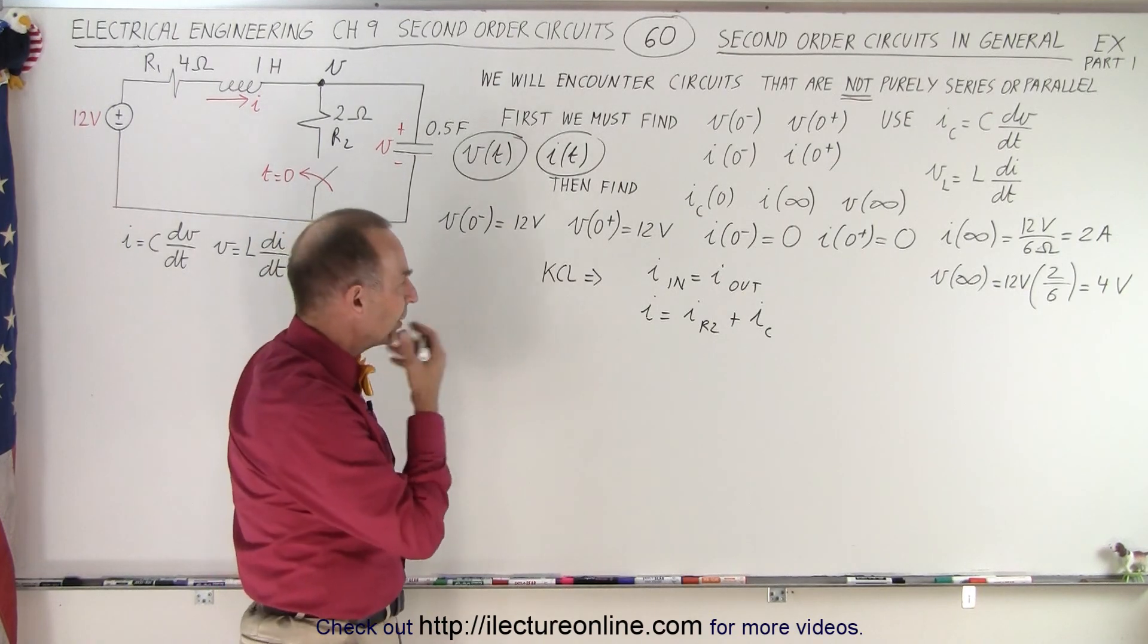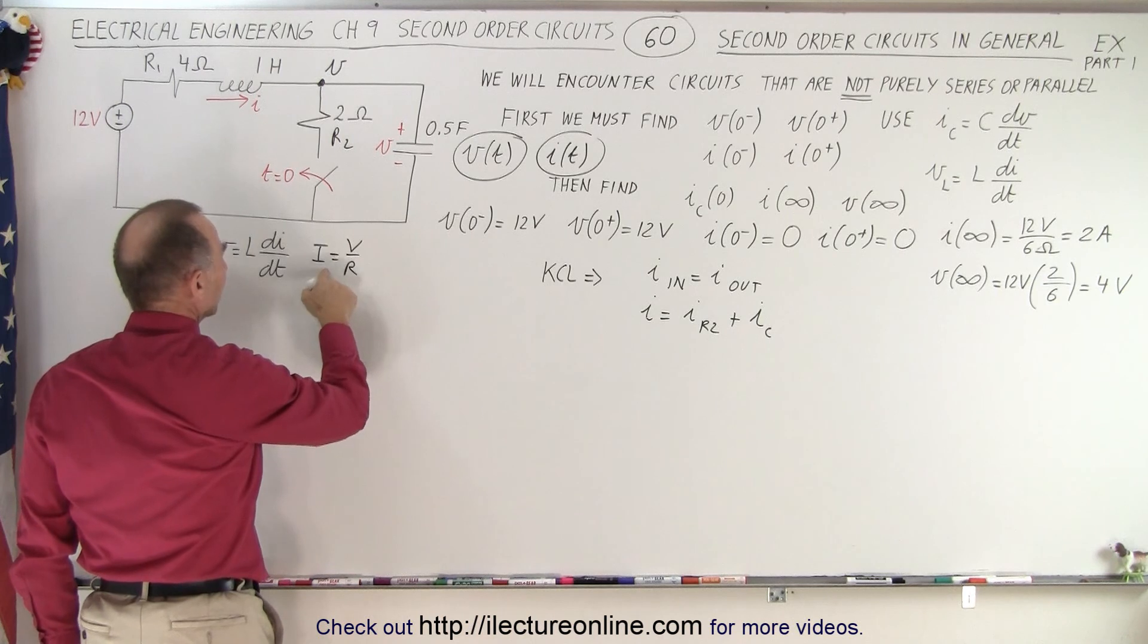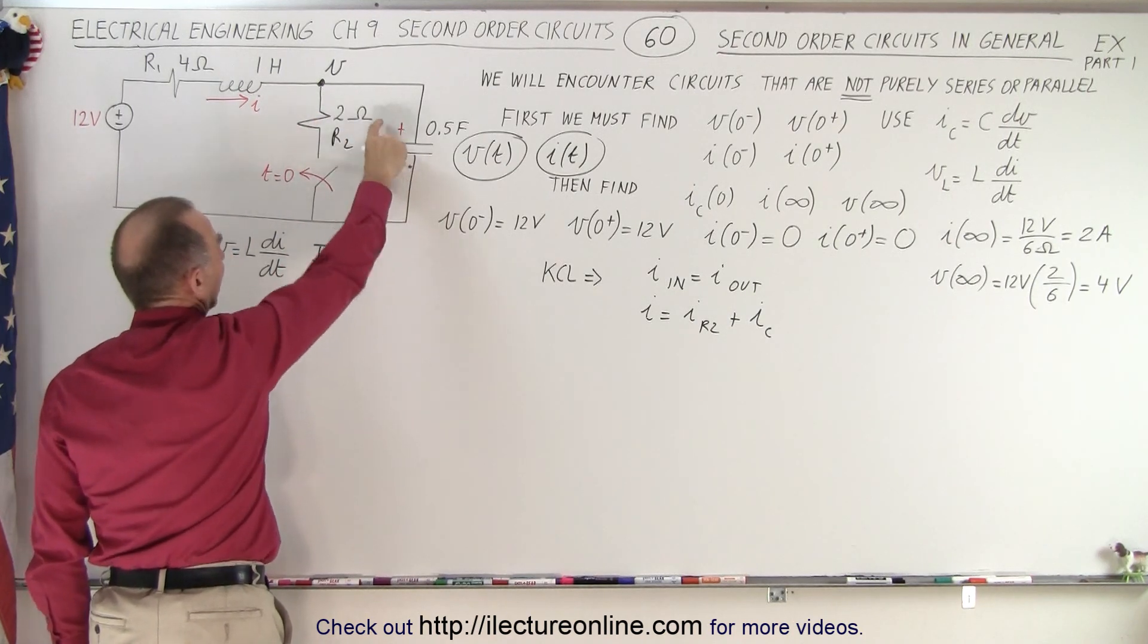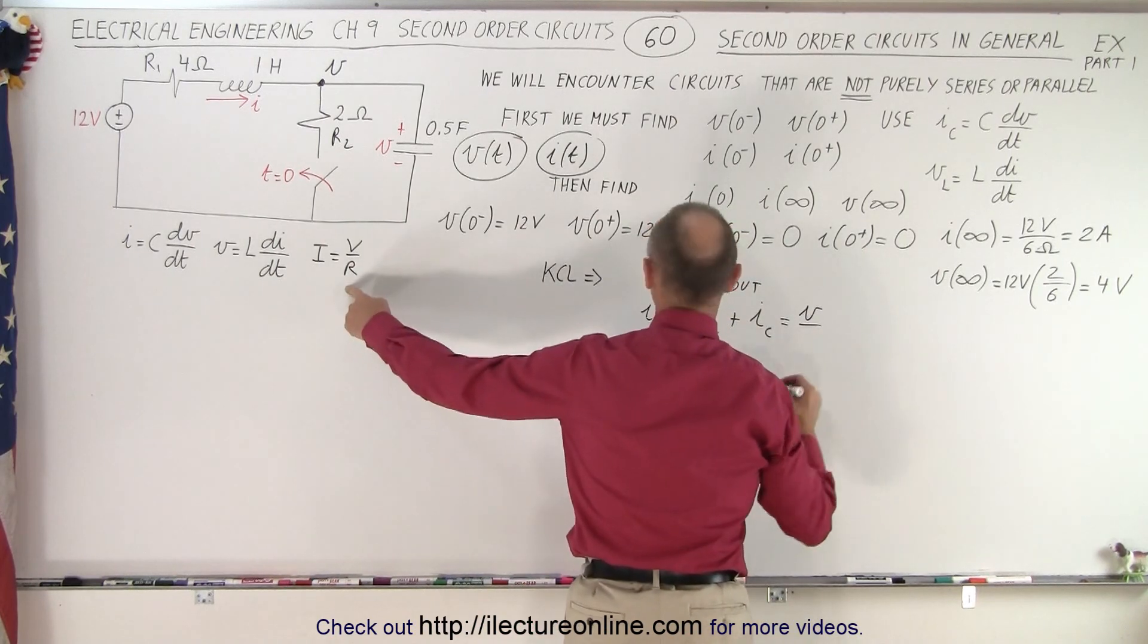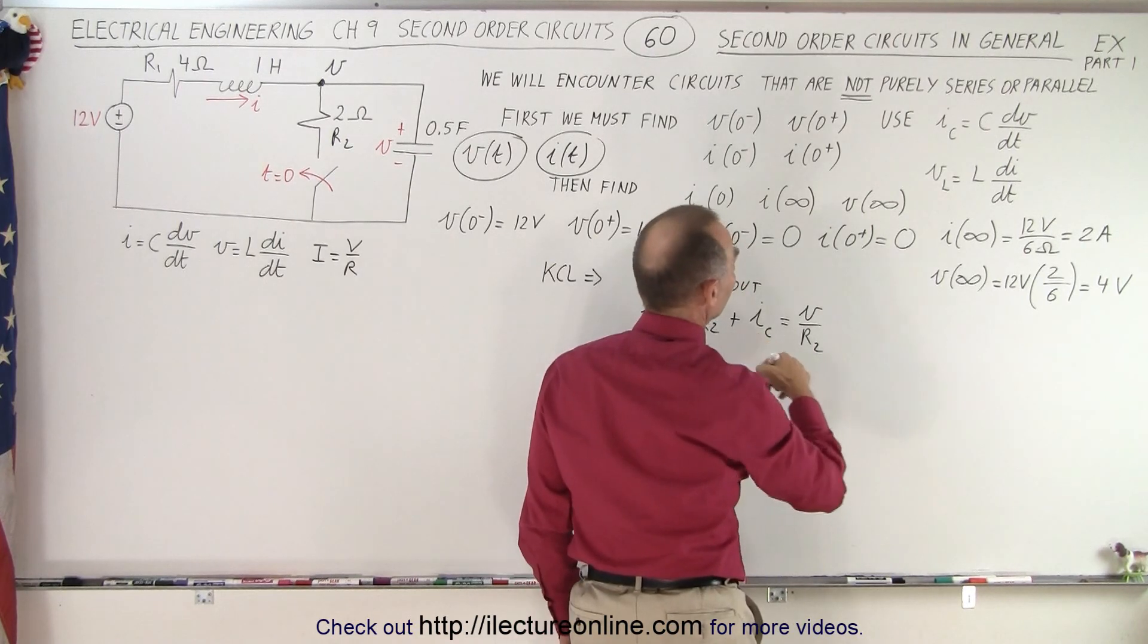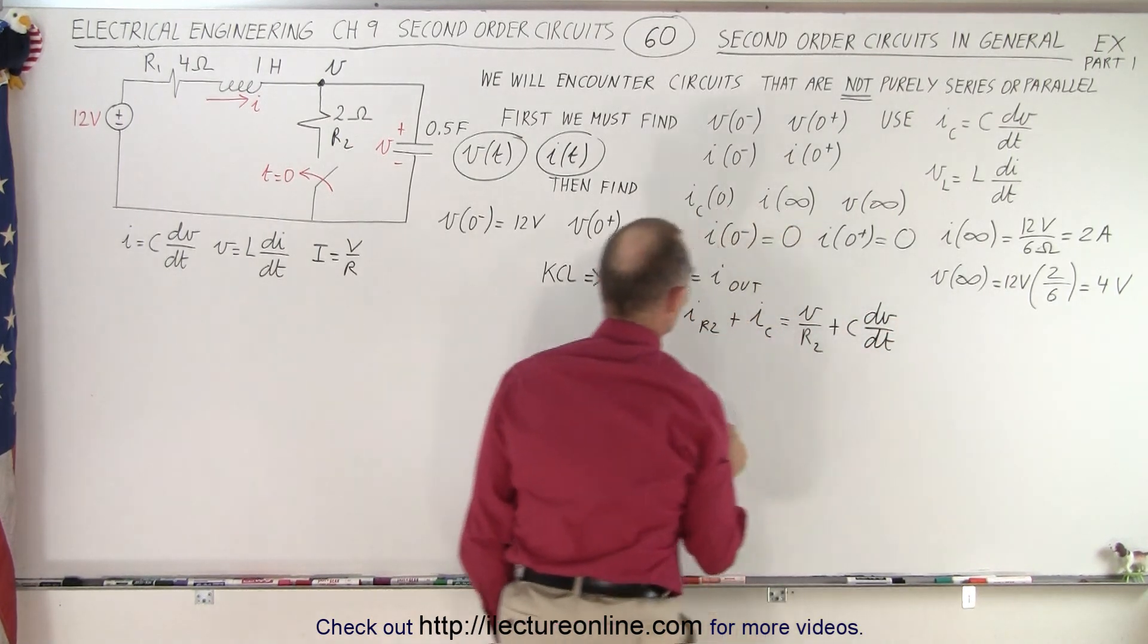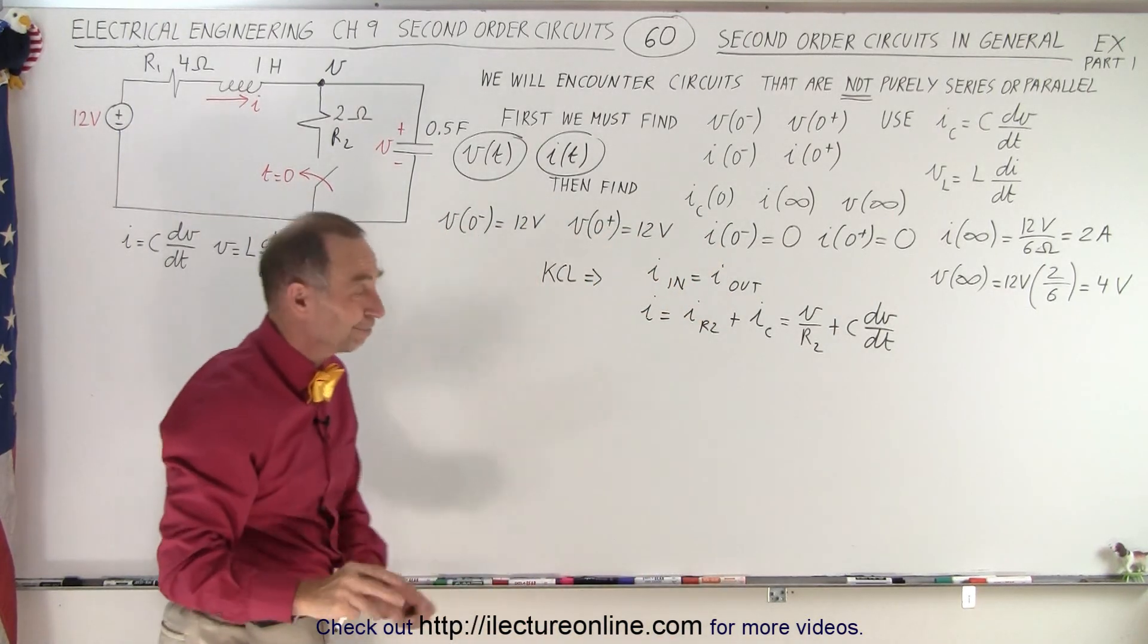Well the resistance can be found by saying, or the current can be found by V over R. So the voltage across the resistor will be V across the capacitor. So in this case that will be V divided by the resistance, which in this case will be R2, plus the current through the capacitor. And for that we'll use this equation right here, which will be plus C times dV/dt. So notice we have current in terms of the voltages in that equation. So that's one equation.